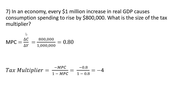In our last problem, in an economy, every $1 million increase in real GDP or real income causes consumption spending to rise by $800,000. What is the size of the tax multiplier? First we find the MPC: change in C divided by change in Y gives an MPC of 0.8. Plugging 0.8 into our tax multiplier formula, we get a tax multiplier of minus 4. Okay, that's it. I hope you found this video helpful.